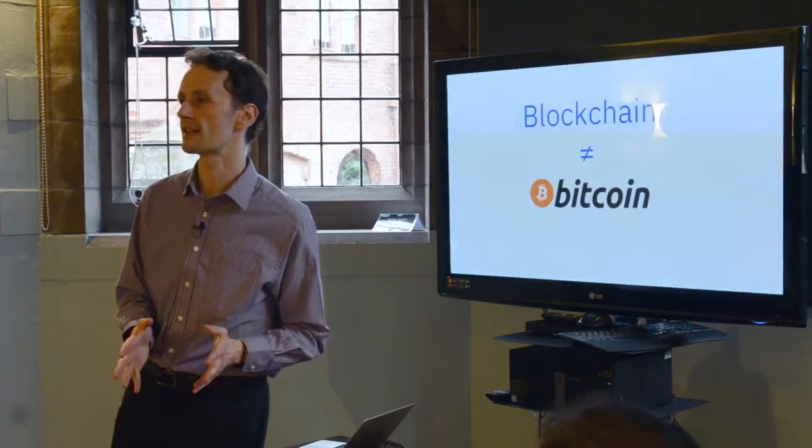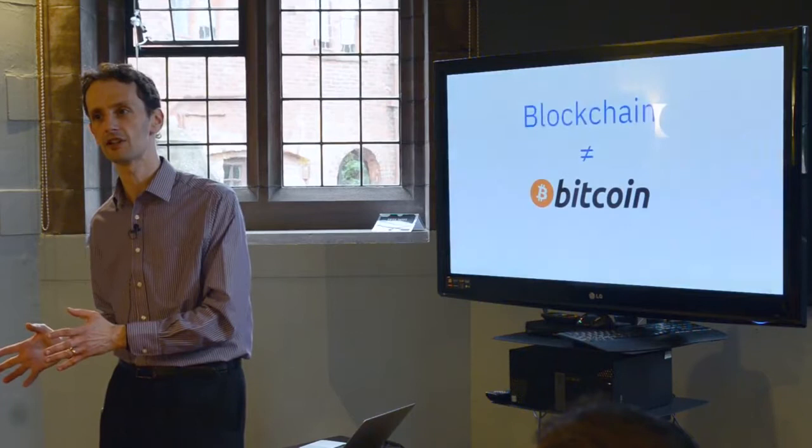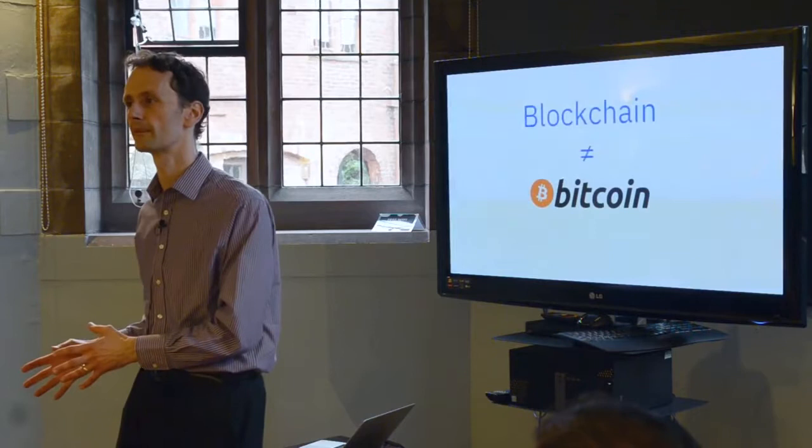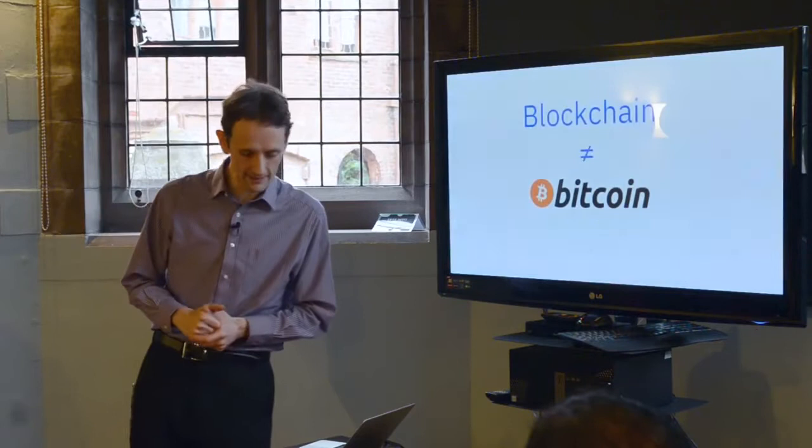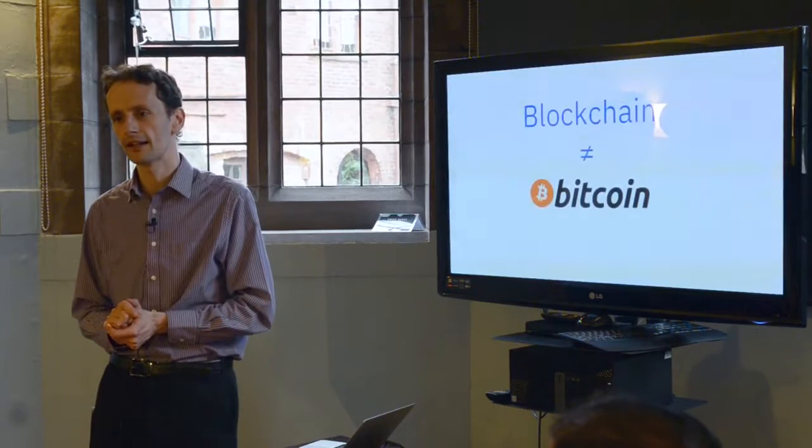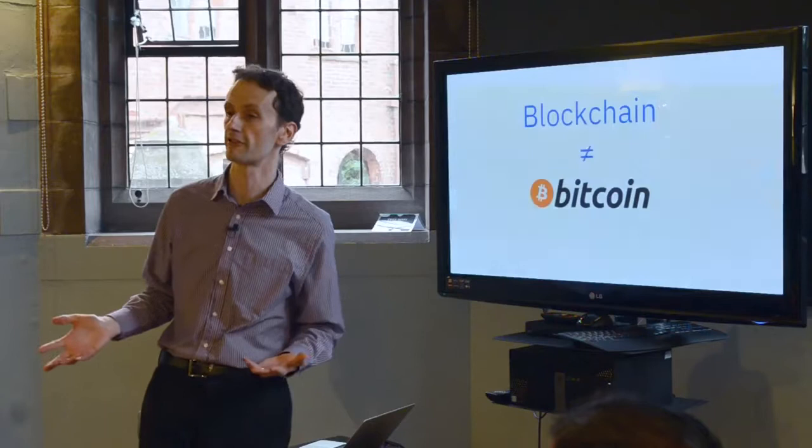So, blockchain for business requires identity on the network. You need to know who you're dealing with. Think about it. Anonymity means that you know something happened, but not who did it. Privacy is the total opposite. It means that you know who you're dealing with, but not necessarily the transaction that occurred. Totally opposite.